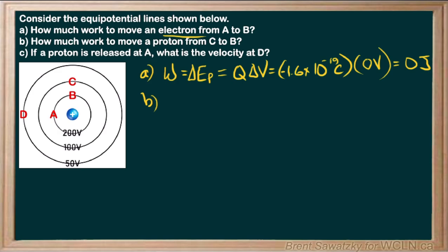On to B. How much work to move a proton from C to B? Again, we will consider our work to be the change in potential energy there. No other transfer of energy to any other form, so that's a nice easy way to do that. Again, Q delta V.